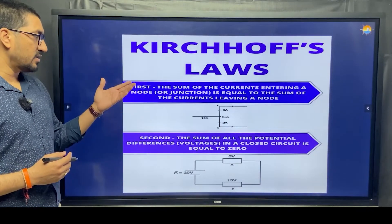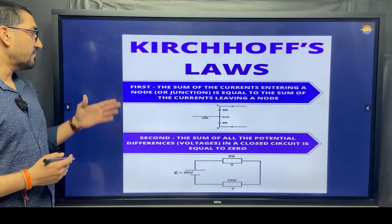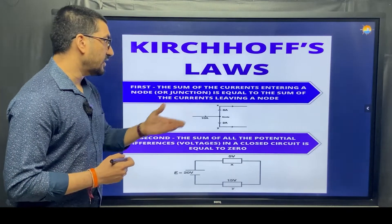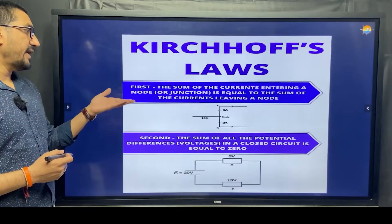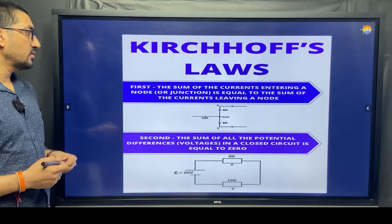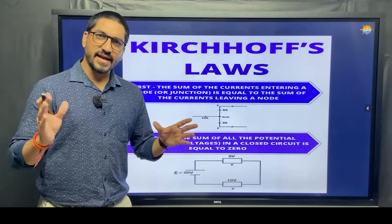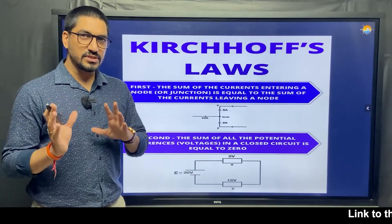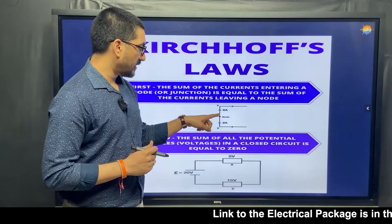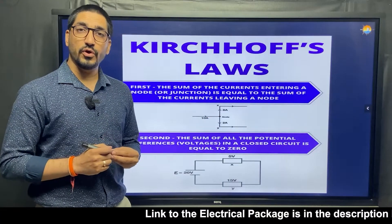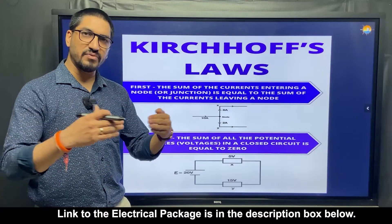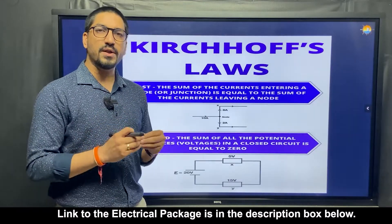There are two Kirchhoff's laws we are going to discuss. The first one is Kirchhoff's Current Law: the sum of the current entering a node is equal to the sum of the current leaving the node. The concept is very straightforward. A node is a junction point, which can be found when two or three wires come and join at one point.